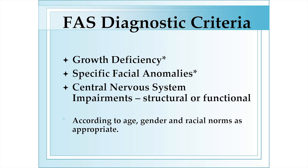Looking at the diagnostic criteria for fetal alcohol syndrome, it requires identification of anomalies in three areas: growth, facial features, and central nervous system impairments, which can be either structural or functional. CDC criteria recommend, whenever possible, to adjust these according to age, gender, and racial norms.